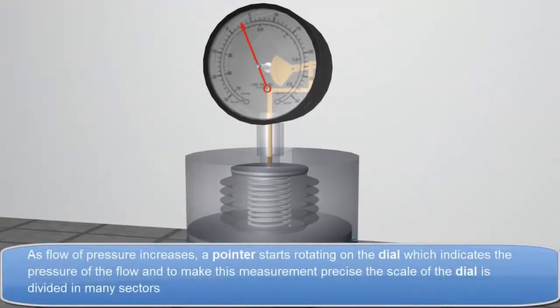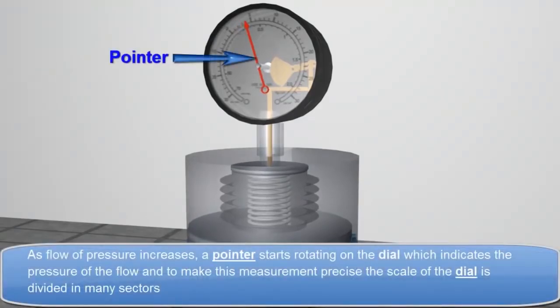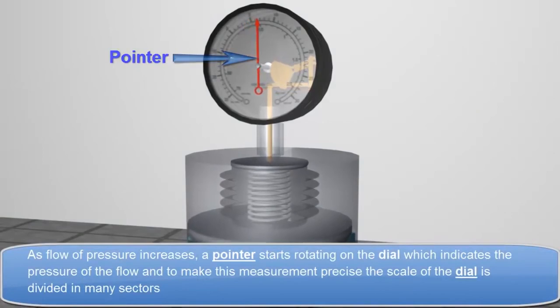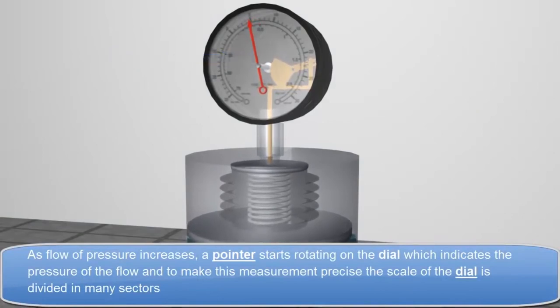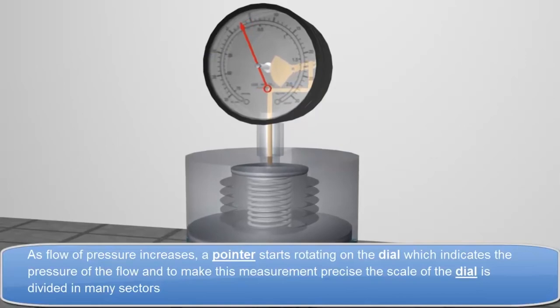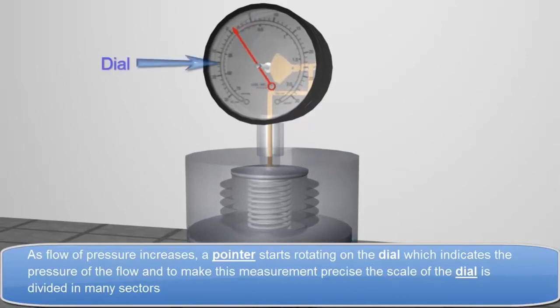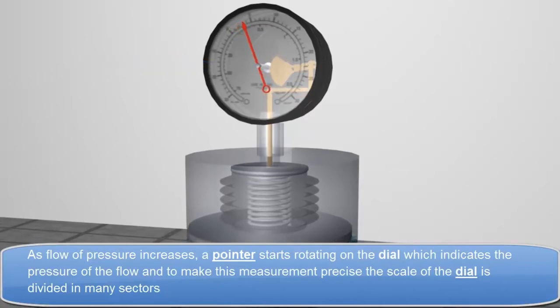As flow pressure increases, a pointer starts rotating on the dial, which indicates the pressure of the flow. And to make this measurement precise, the scale of the dial is divided into many sectors.